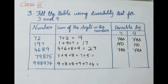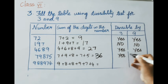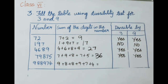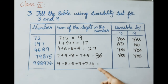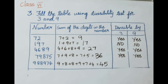For 79,875: 7+9+8+7+5 = 36 — 36 is a multiple of 3, so divisible by 3; 36 is also divisible by 9, so divisible by 9. For 9,88,974: 9+8+8+9+7+4 = 45 — 45 is a multiple of 3, so divisible by 3; 45 is also divisible by 9, so the number is divisible by 9.